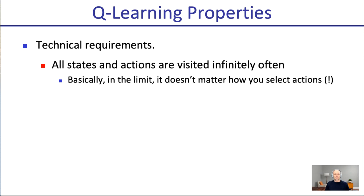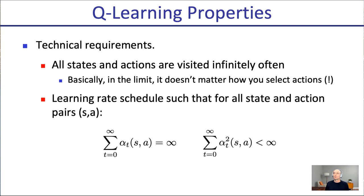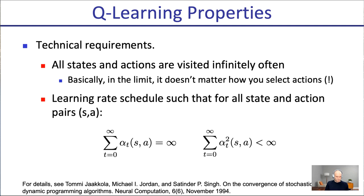Technical requirements: all states and actions must be visited infinitely often. The learning rate has a mathematical condition: the sum of learning rates over time must sum to infinity — so there's always enough capacity to correct for unlucky past experiences. But to bound variance, the sum of the squares of the learning rates must also be bounded. Some papers are listed that give the theory behind this.